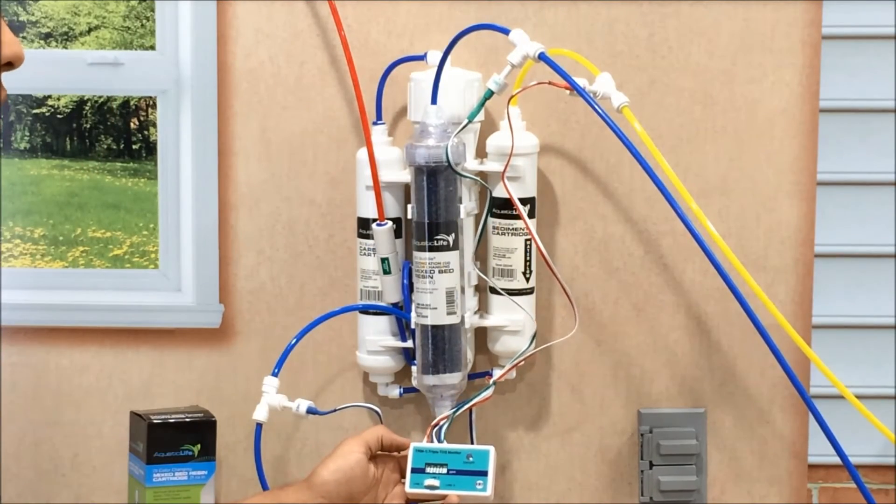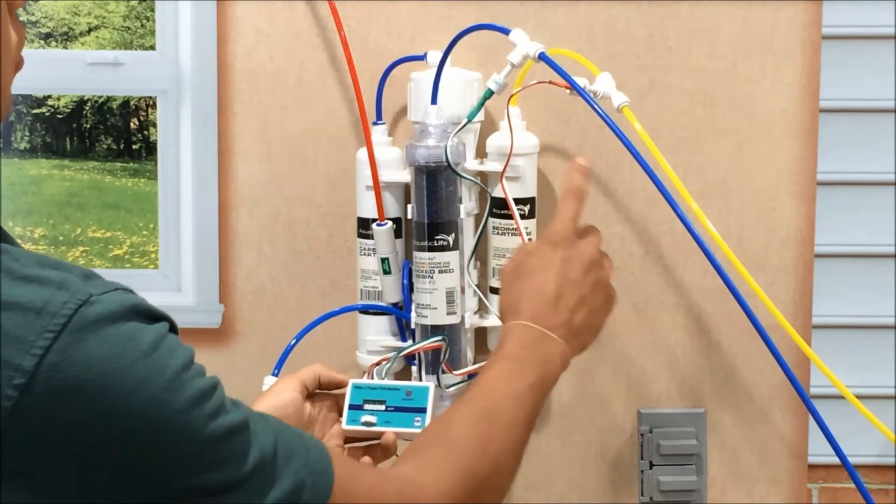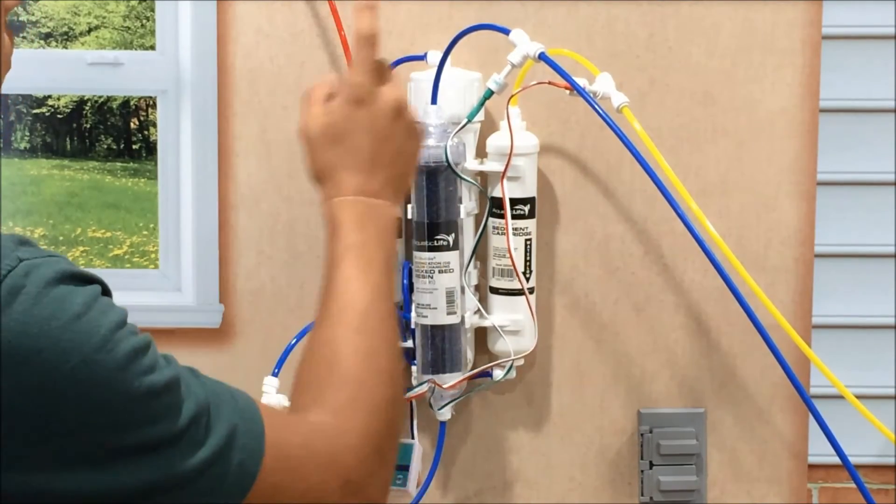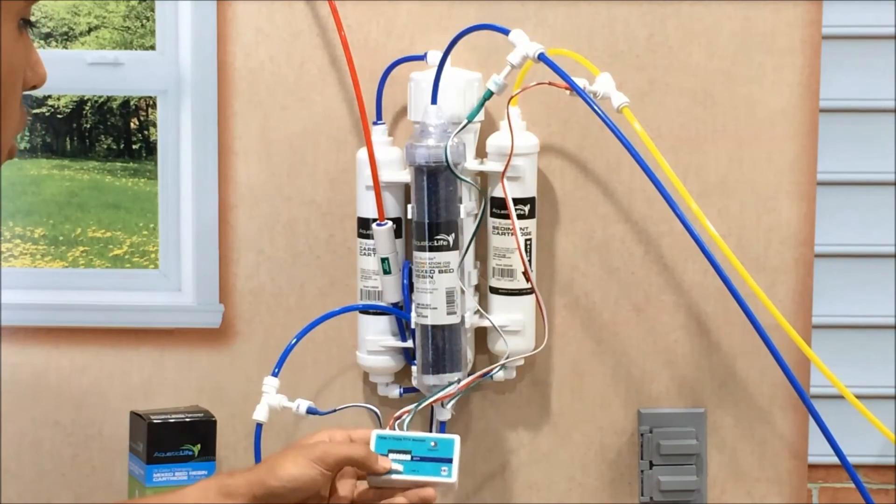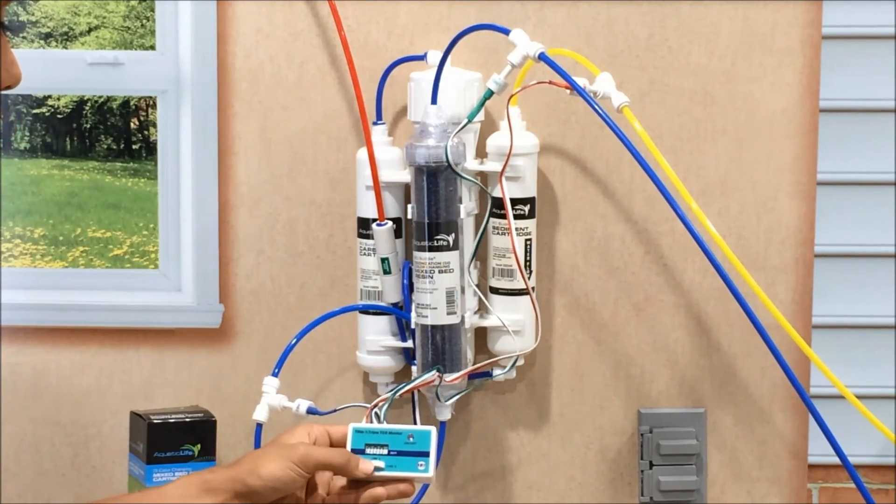By using the triple TDS meter, it allows you to monitor the water coming in from the supply, the water coming out of the filtered, and the water coming out of your DI cartridge. And then you can just toggle through using this little button here.